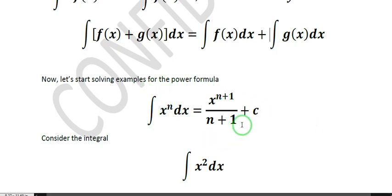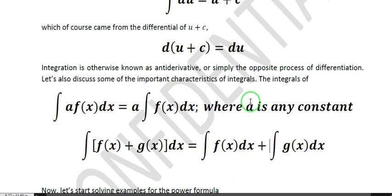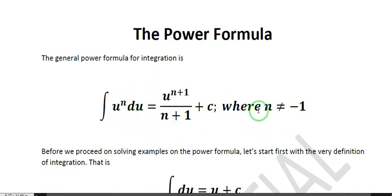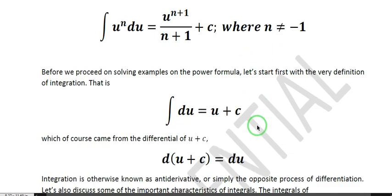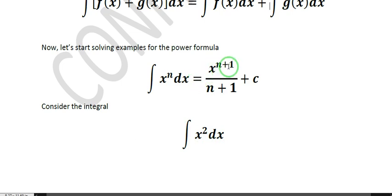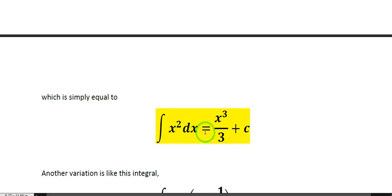So the general power formula is ∫u^n du = u^(n+1)/(n+1) + C. The difference between the two formulas will be understood better in the examples. Consider the integral of x squared dx — this is a straightforward application. Using the formula with n equal to 2, this gives x to the third over 3, plus C. Therefore the integral of x squared dx is just equal to x cubed over 3 plus C.